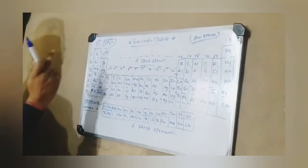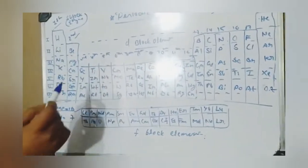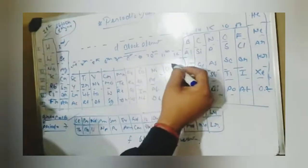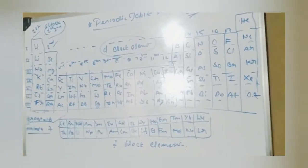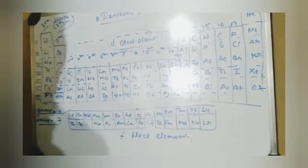We have discussed two blocks: S-block and P-block. S-block is first and second group, and P-block is groups 13 to 18 elements. What are the remaining elements? The remaining elements are called D-block elements.